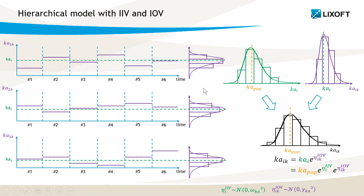It is important to note that occasions between individuals are independent. For example, eta_11, the random effect for occasion 1 of individual 1, is not the same value as eta_21, the random effect for occasion 1 of individual 2. There are two different values drawn independently from the same distribution. Thus, the inter-occasion variability also represents an inter-individual variability.